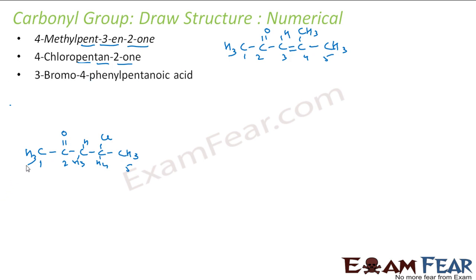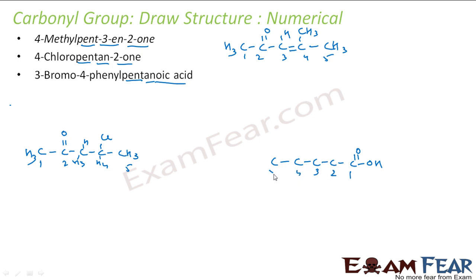The next is 3-bromo-4-phenyl-pentanoic acid. Let me draw pentane first: 1, 2, 3, 4, 5. Pentane is done, all single bonds. Pentanoic acid — that means this is my COOH. This is carboxylic acid. Let me number it: 1, 2, 3, 4, 5. Numbering starts from the COOH position. At 3, I have a bromo group. At 4, I have a phenyl group. This is the structure. The extra hydrogens you can add.